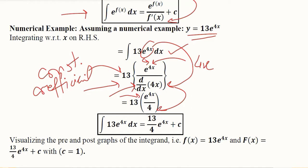Finally, this 4 comes outside and we get 13 over 4 and this function as it is remains.